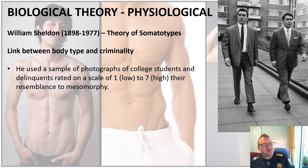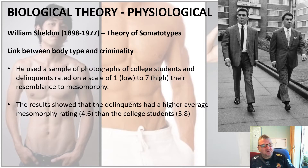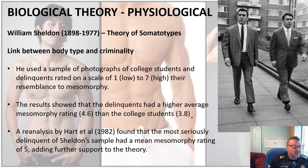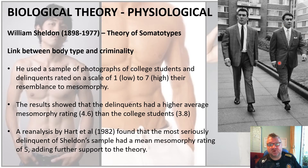Sheldon used photographs of college students and delinquents, rating them on a scale of one for low to seven for high mesomorphic criminality. Results showed delinquents had a higher mesomorphic rating of 4.6 compared to college students at 3.8. Unlike Lombroso, Sheldon did use a control group. A reanalysis by Hart et al. in 1982 also found that the most seriously delinquent in Sheldon's sample had a mean mesomorphic rating of 5, adding further support to the theory. The Kray twins — violent gangsters — would also conform to the mesomorphic trait.